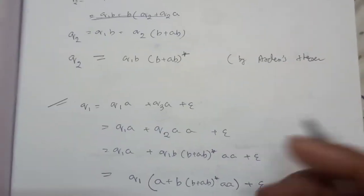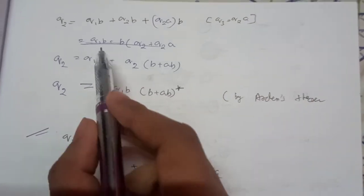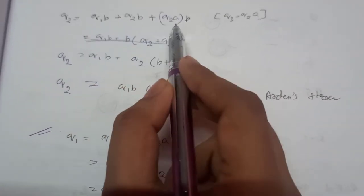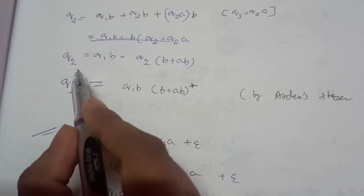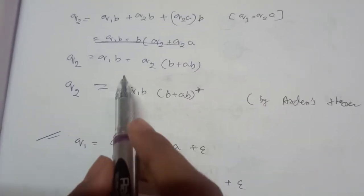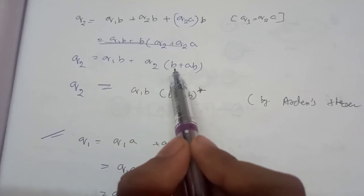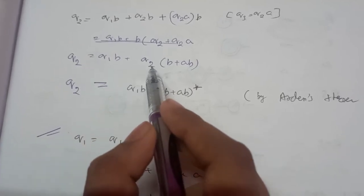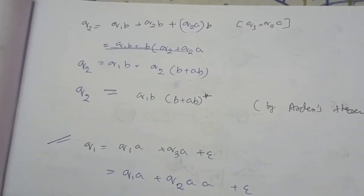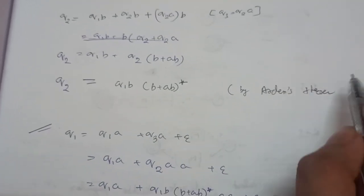Using substitution, we substitute Q3 = Q2A into Q2's equation: Q2 = Q1B + Q2B + Q2AB. Taking Q2 common: Q2 = Q1B + Q2(B + AB). By Arden's theorem, R = Q + RP gives solution R = QP*, so Q2 = Q1B(B + AB)*.